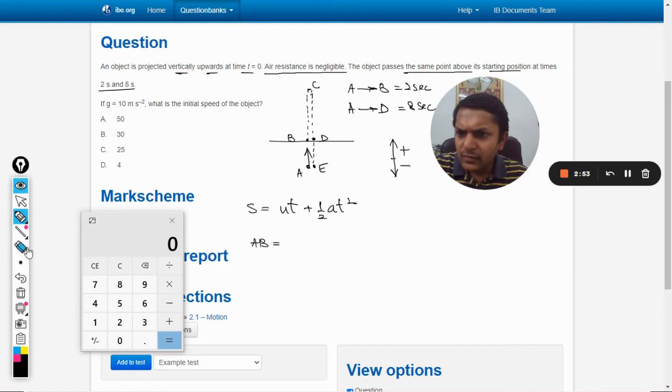Like we take gravity is negative and the velocity, the upper direction is positive. So for the distance AB, when it goes to AB, I can write S1 here. So S1 is u into t, because after two seconds it reaches that position.